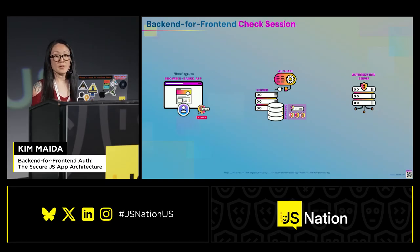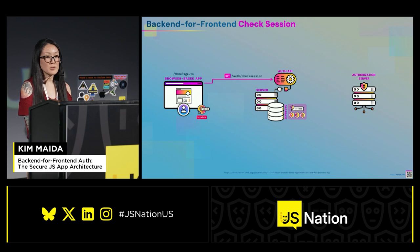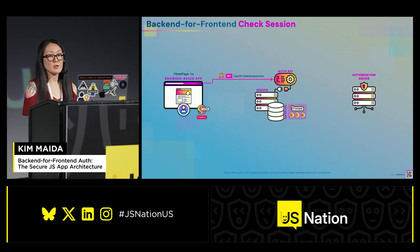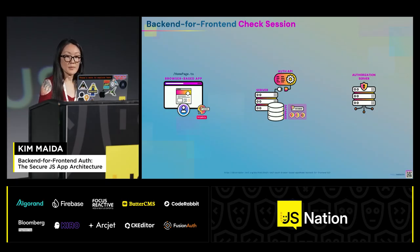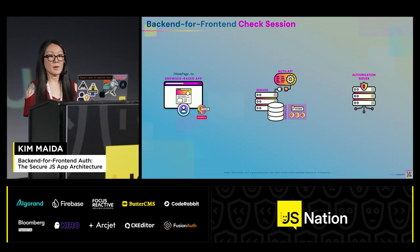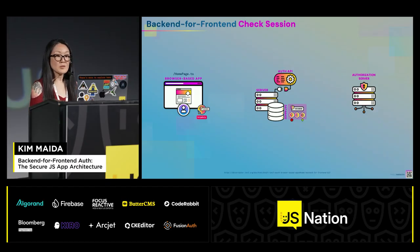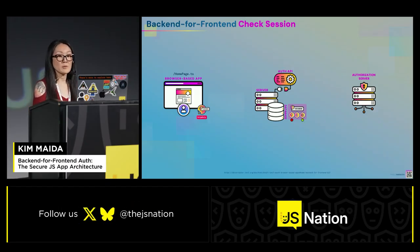Whenever the front-end app loads, it calls a back-end check session endpoint with the session ID cookie if it exists. The back-end uses that session ID to look up the user's session. If there's a valid session, then the back-end uses the access token expiration to schedule a refresh grant for when the token expires.